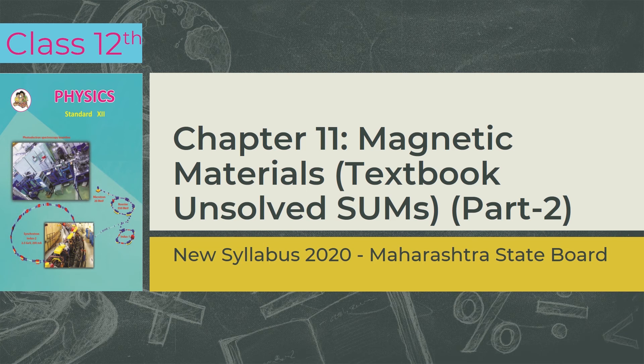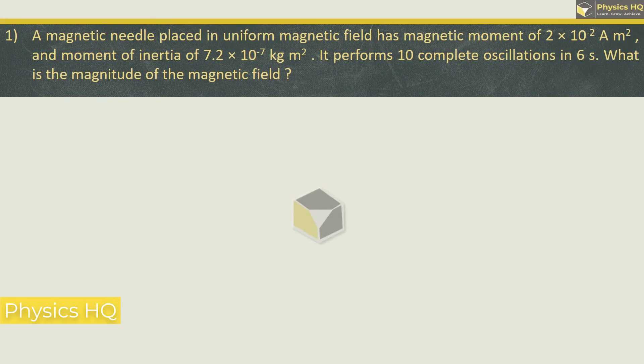Let us start with the first sum. A magnetic needle placed in uniform magnetic field has a magnetic moment of 2 x 10 raise to minus 2 ampere meter square and moment of inertia of 7.2 x 10 raise to minus 7 kg meter square. It performs 10 complete oscillations in 6 seconds.